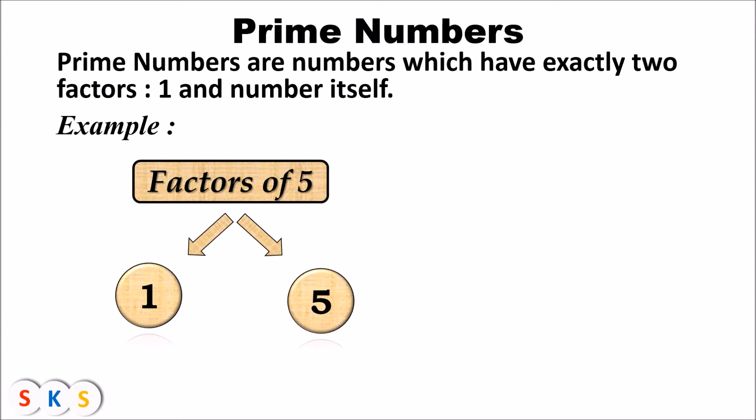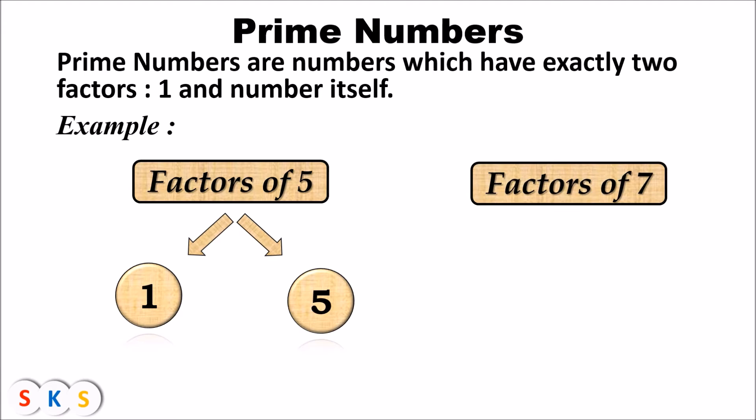The other factor of five is five itself — five ones are five. So the number five has exactly two factors: one and five, that is one and the number itself. Therefore five is an example of a prime number.